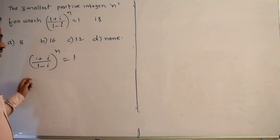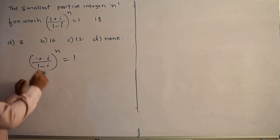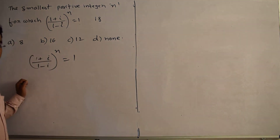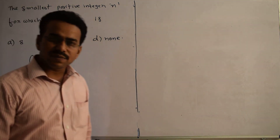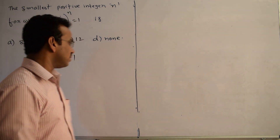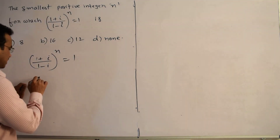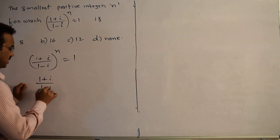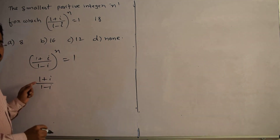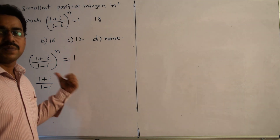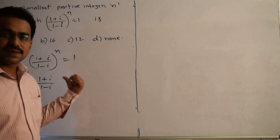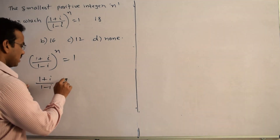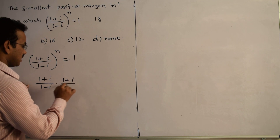In the next step, it would be better to solve (1 plus i) by (1 minus i) first, then think about n. We are going to simplify by applying the process of rationalization — multiply and divide by (1 plus i).